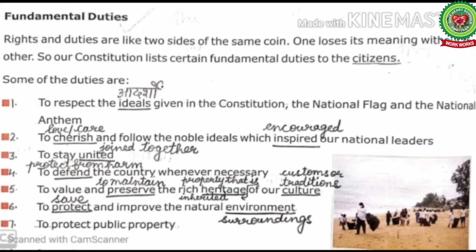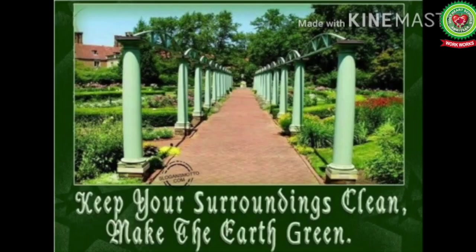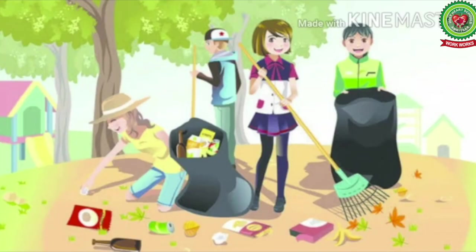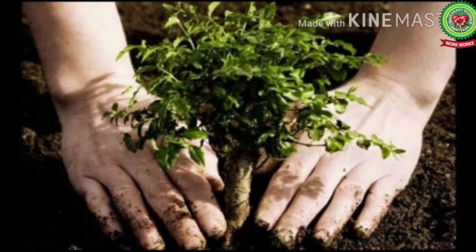Number six — to protect and improve the natural environment. 'Environment' means surroundings. We must take care of our surroundings and the natural world. It is a moral duty to save our natural surroundings and keep it free from pollution by growing more and more trees.